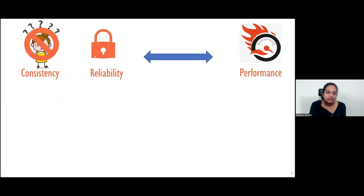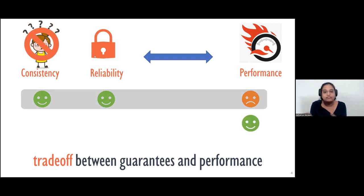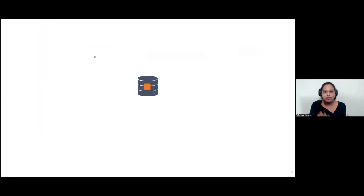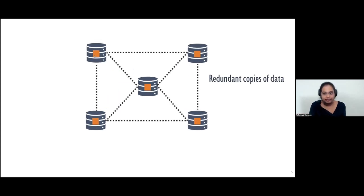A system that provides strong consistency and reliability guarantees might not perform well. In contrast, a system that provides very good performance might only offer weaker consistency and reliability guarantees. In this talk, I'll focus on the trade-off between consistency and performance. In a distributed storage system, you don't just store data on a single machine — if that machine crashed, you would lose access to your data. So usually you store data redundantly on many machines, so even if one fails, you still have access.